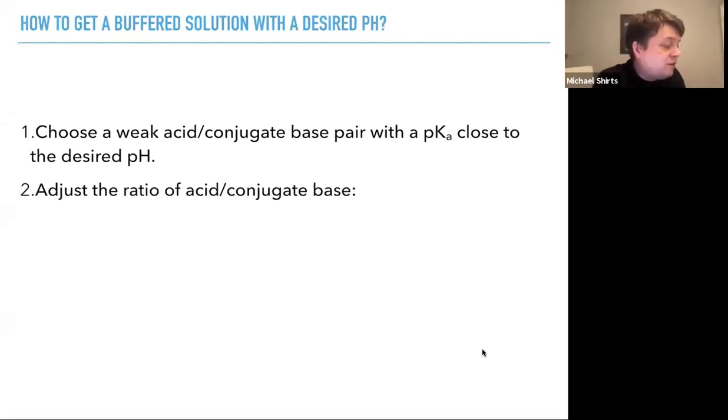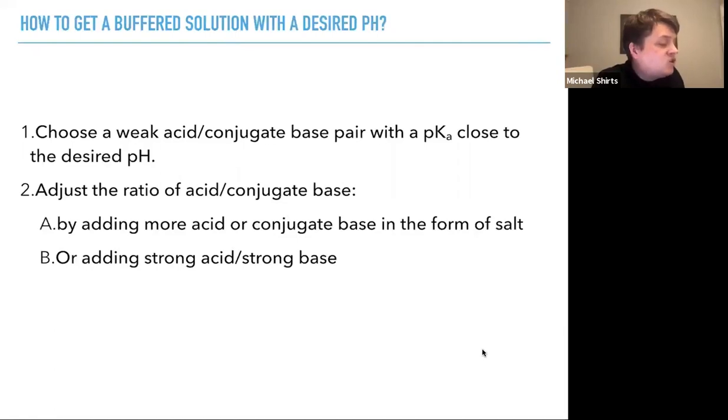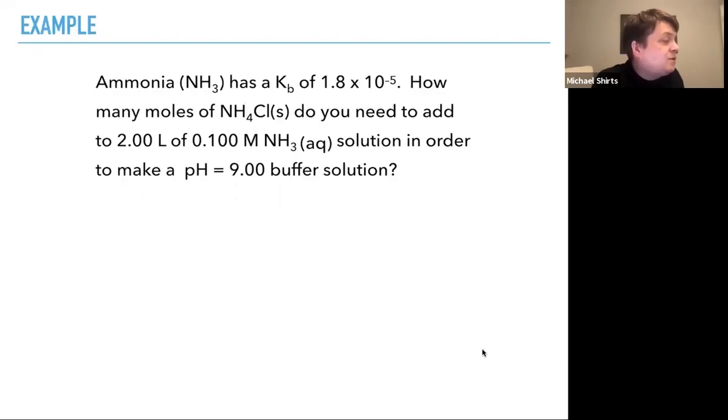And then you adjust the ratio of the acid and conjugate base by adding more acid or conjugate base in the form of a salt, or by adding a strong acid or strong base to neutralize what's in there to get the ratio exactly right. And then the pH is what you desire. So let's see how we do this.